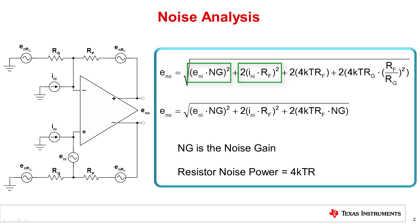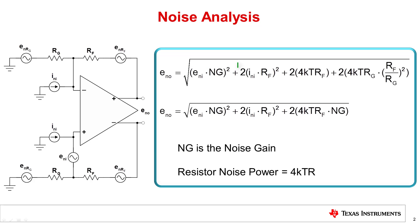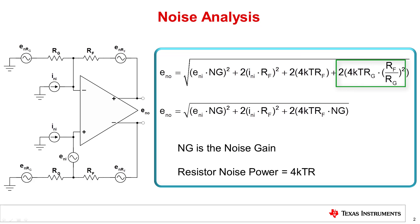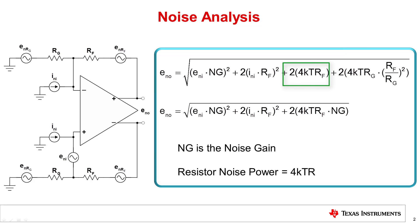The total noise is calculated using superposition by considering each source individually, and then using the square root of the sum of squares to add up the uncorrelated events. The FDA's voltage noise is amplified by its own noise gain. The current noise at each input is multiplied by the feedback resistance. The thermal noise of each gain resistor is amplified by the signal gain RF over RG. The thermal noise of each feedback resistor gets to the FDA's output with no further amplification.